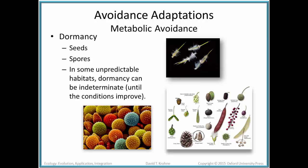Let's talk about these avoidance adaptations, starting with metabolic avoidance. For instance, seeds have dormancy — a period of quiet in which they can spend time avoiding unpredictable habitats. The dormancy can be indeterminate, meaning it can last for a long period of time. In the case of seeds, it can sometimes be decades or even hundreds of years that they will survive in the soil and then germinate when conditions are appropriate.